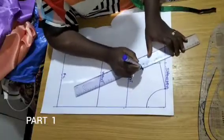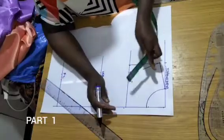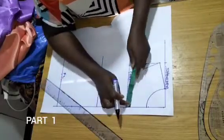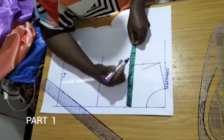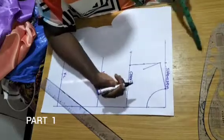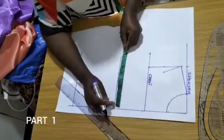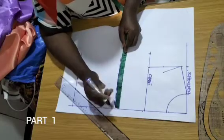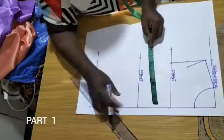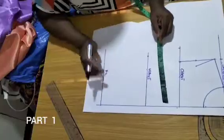For the front pattern, I'll come in this way. To complete this process, I'll place my tape right here and measure my bust. Then I'll measure my waist, and then my hip.